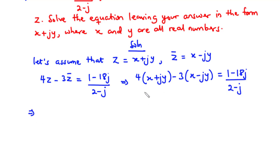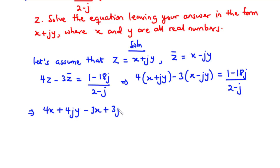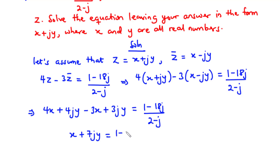Simplifying the left-hand side: 4 times x gives 4x, 4 times jy gives 4jy, negative 3 times x gives negative 3x, and negative 3 times negative jy gives plus 3jy. That equals 1 minus 18j divided by 2 minus j. Adding common terms: 4x minus 3x is x, and 4jy plus 3jy is 7jy. So we have x plus 7jy equals 1 minus 18j divided by 2 minus j.